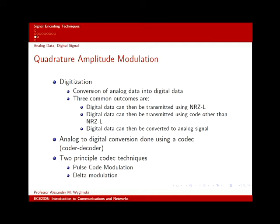Now we're going to talk about analog data — like speech or image information from a camera — and how you digitize it into a digital signal. This is used in applications such as cell phones, where human speech is converted into digital data and transmitted. Digitization is achieved using an analog-to-digital converter (ADC). To get the analog signal back, you use a digital-to-analog converter (DAC). The resulting digital information can then be encoded using NRZ-L or other line codes, or converted back into an analog signal.